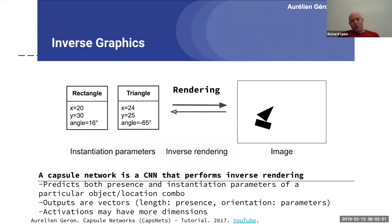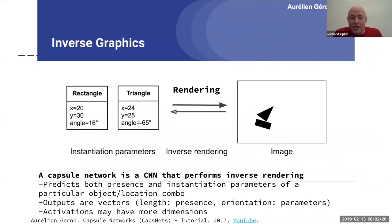To discuss what a capsule network does, we can discuss the idea of inverse graphics and computer graphics. In computer graphics, you basically start with whatever instantiation parameters — a rectangle or a triangle, the angle it's at, the size, the location — and then you can render that to create an image. Or if you start out with the image and you want to determine what the instantiation parameters were, you can do what a capsule network does. A capsule network is essentially a CNN that performs inverse rendering.